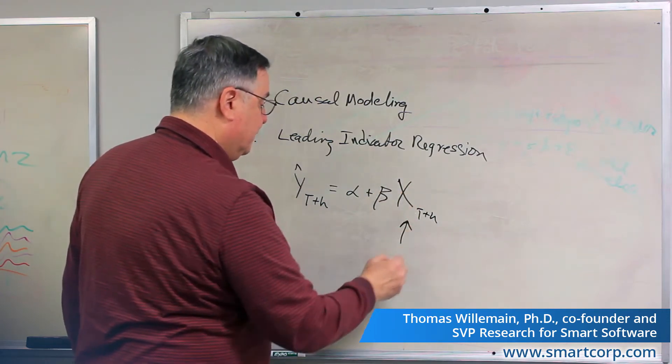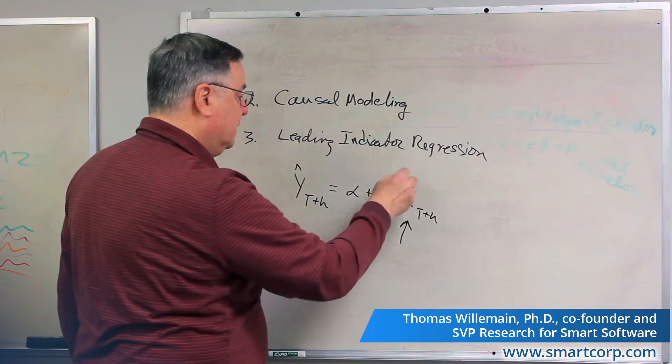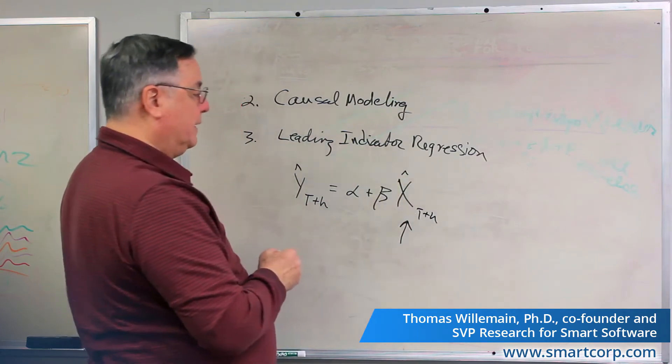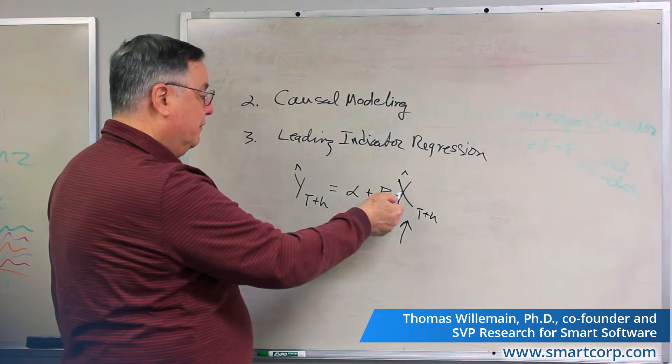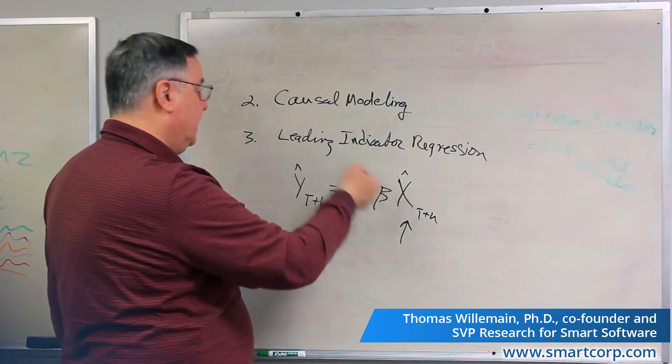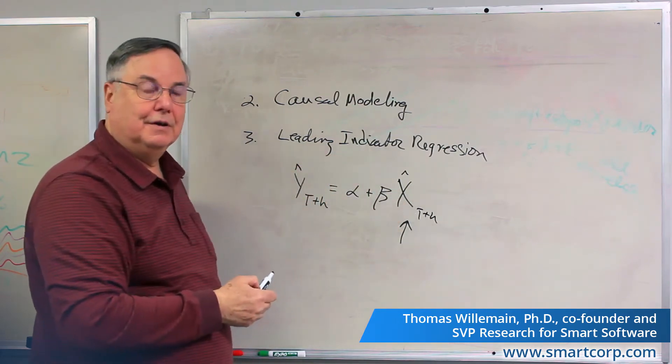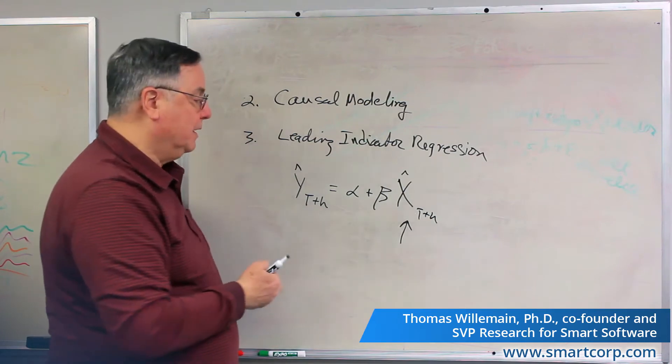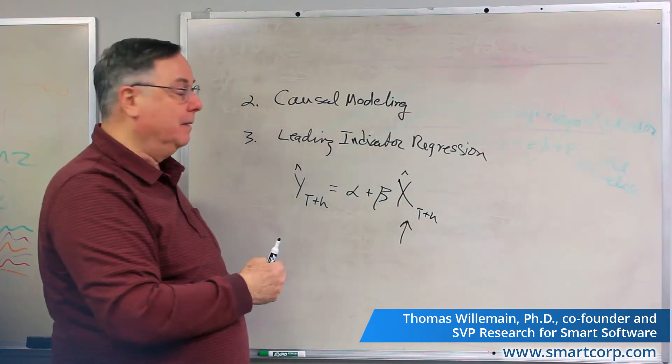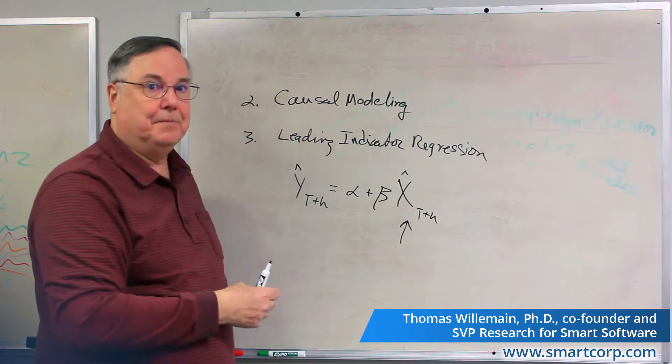So there would be a separate equation predicting x, and whatever that forecast was would be the predictor variable. So this forecast predicts that forecast. And this is obviously more complicated because you have a double forecasting problem, and you need to figure out what x might be.